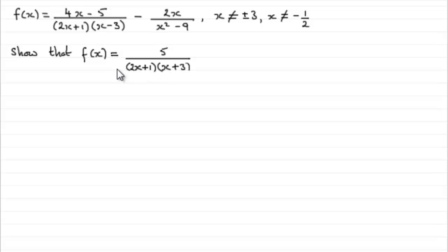So how are we going to show that f of x simplifies to this? Well what we've got here is two fractions which we're subtracting so we need to put them over a lowest common multiple.